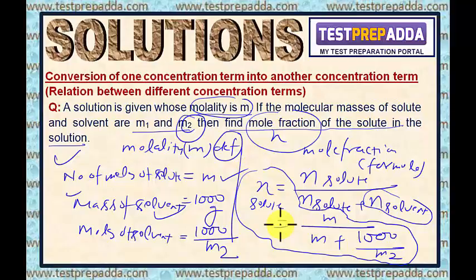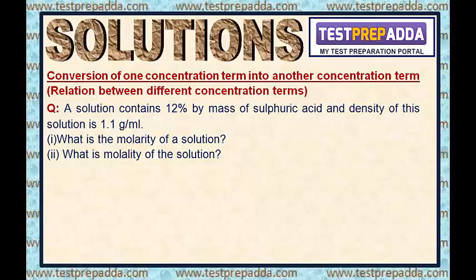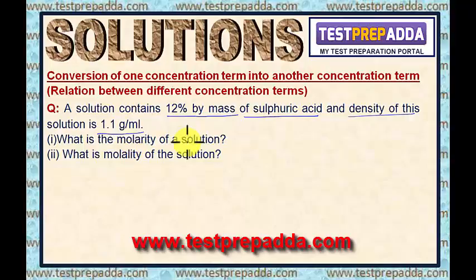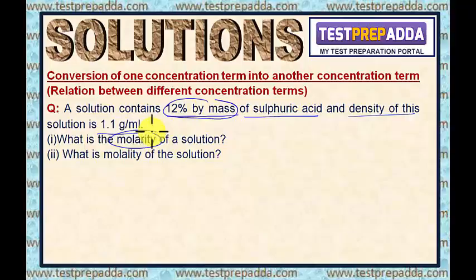In the same manner, we can find relations between all concentration terms. Now here I have a question with numerical values: a solution contains 12% by mass of sulfuric acid and density of the solution is 1.1 gram per ml. What is the molarity of the solution? What is the molality of the solution? Again, percentage by mass is given and molarity is asked — a convergent type question. Percentage by mass is given and molality is asked — also a convergent type question.